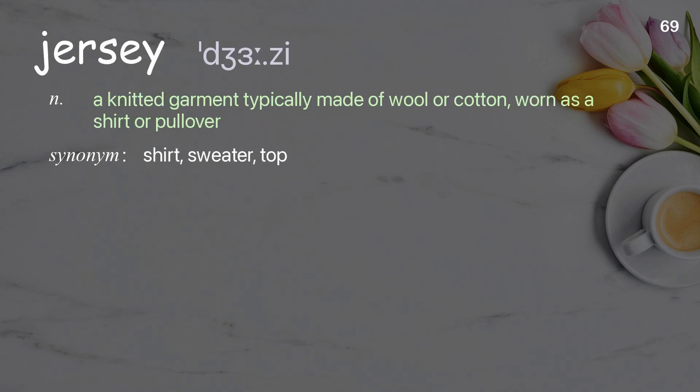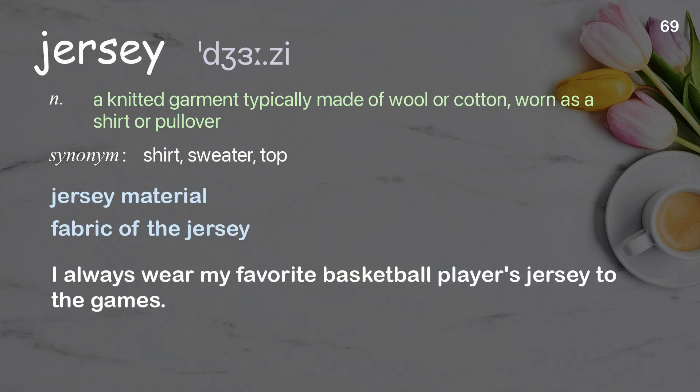Jersey: a knitted garment typically made of wool or cotton, worn as a shirt or pullover. Examples: jersey material, fabric of the jersey. I always wear my favorite basketball player's jersey to the games.